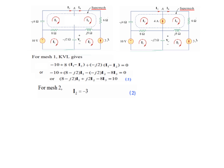For mesh two, since there is a current source directly in this mesh and the direction is opposite to our assumed clockwise direction, we write I2 equals minus 3 amperes. This is the second mesh equation.